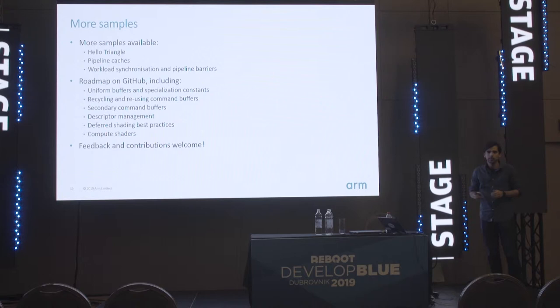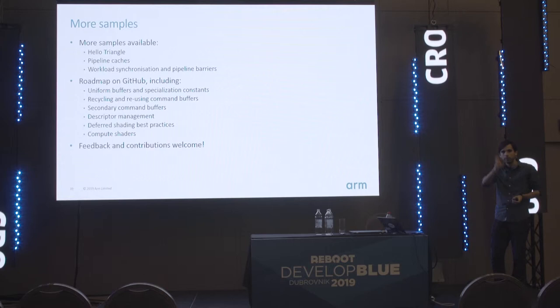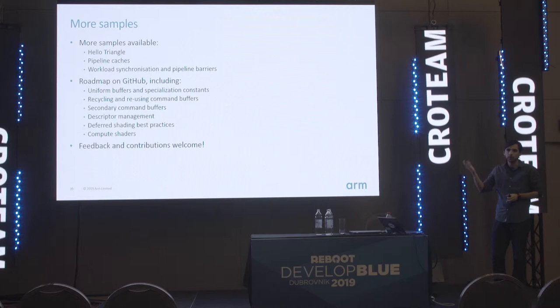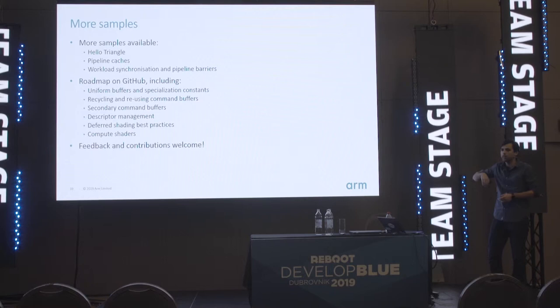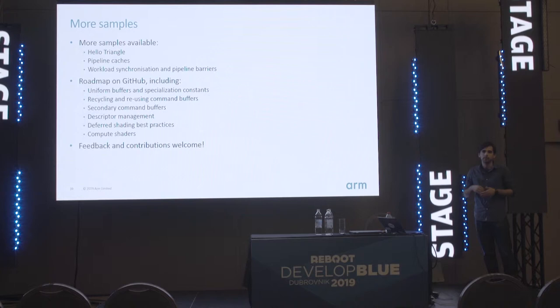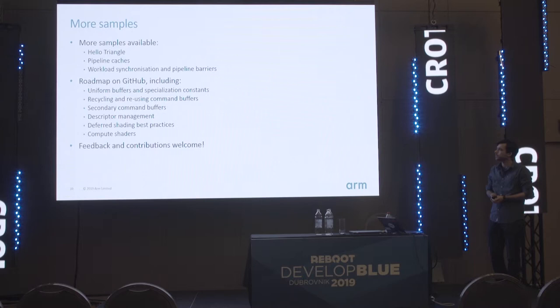In terms of samples, we have a Hello Triangle sample that does none of this abstraction, so you can see exactly the first thousand lines needed to get going. From there we take on other samples that hide more and more. We also have a sample showing the benefit of pipeline caches, and another on setting up pipeline barriers correctly. We have more samples in the backlog, and since we released at GDC, people are cloning and giving feedback. Since it's open source, I encourage everyone to check them out and give us pull requests.